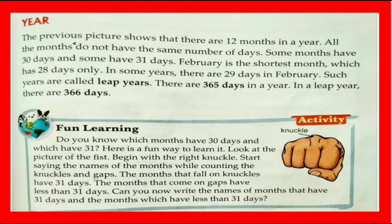There are 12 months in a year. All the months do not have the same number of days — some months have 30 days and some have 31 days. February is the shortest month, which has only 28 days. In some years there are 29 days in February; such years are called leap years. There are 365 days in a year, and in a leap year there are 366 days.